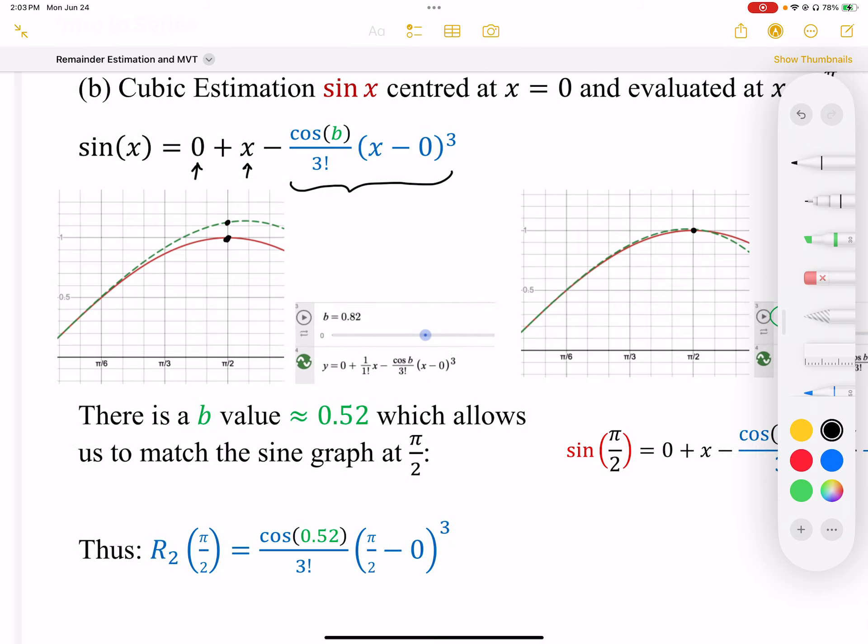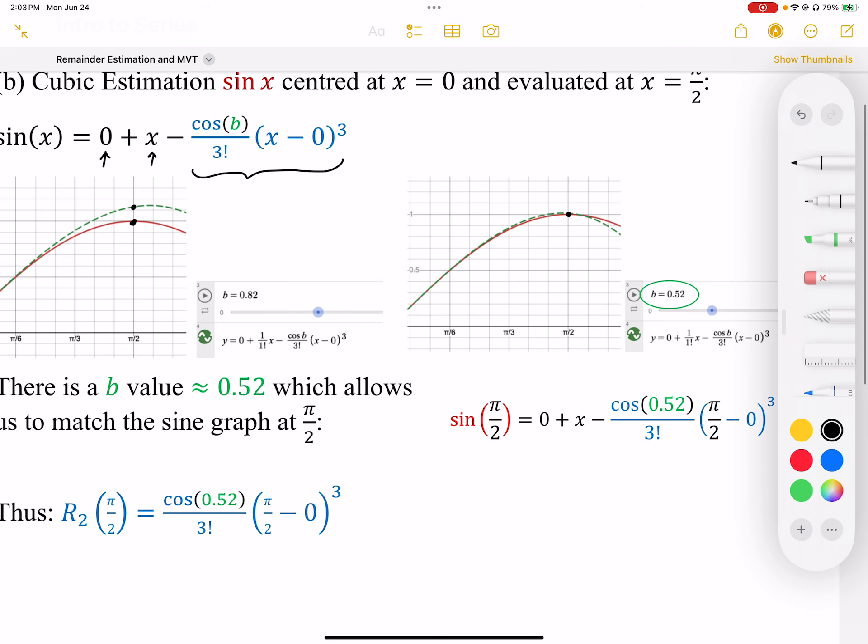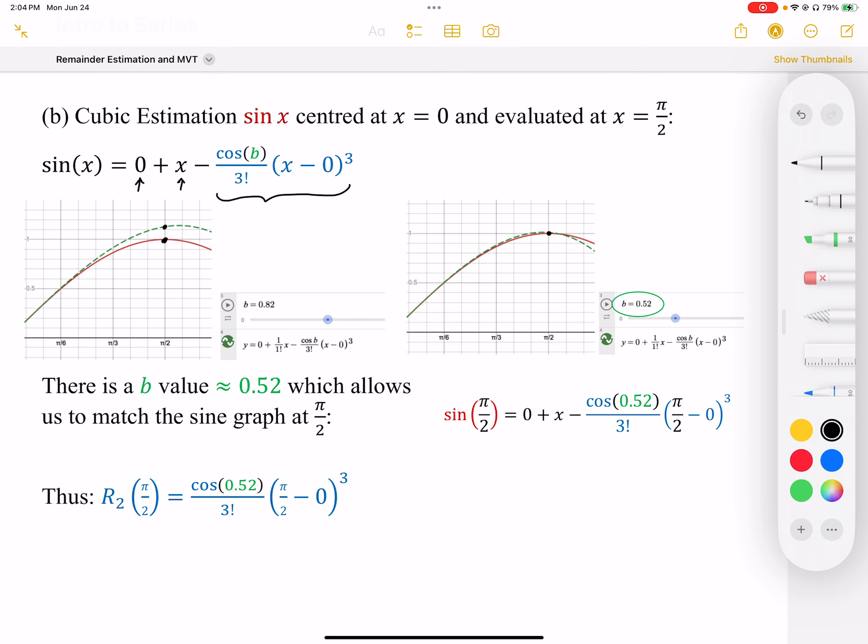And if we take a look at when b equals 0.82 on the left here, we're a little bit off. We can see that our estimation in green is off from our actual value in red. And as we move our slider, we can see that at approximately 0.52, we get a much better match.